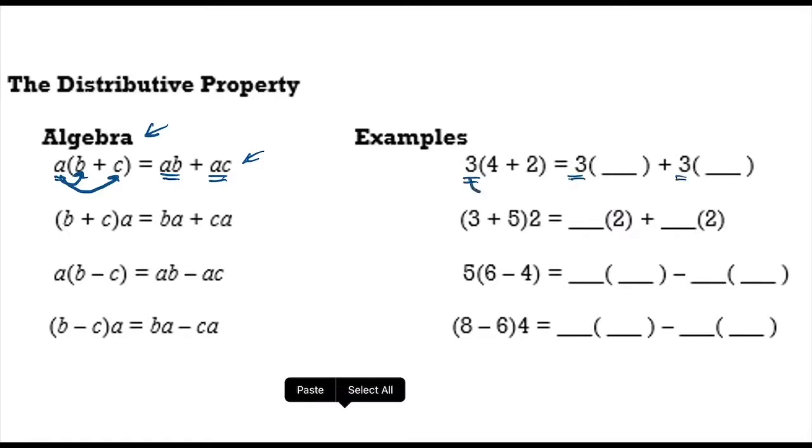So you put 3 and 4 there, 3 times 4, and then 3 is also being distributed by 2. So you got 3 times 2, so we don't have to necessarily have to work that out. We just have to kind of show what's going on there with the distributive property.